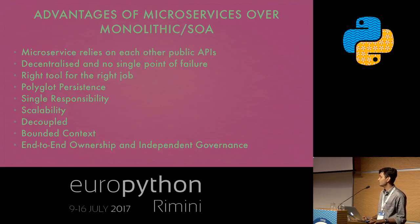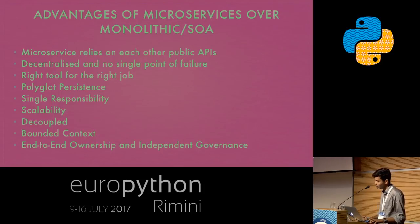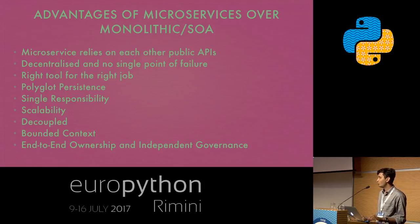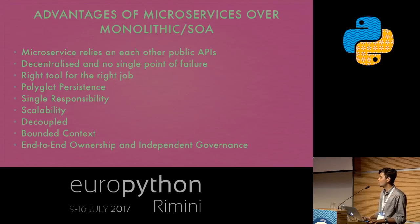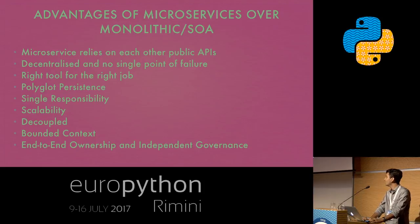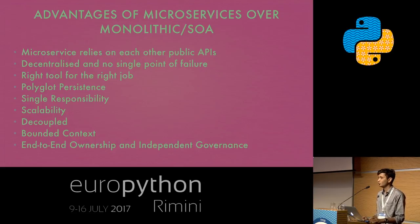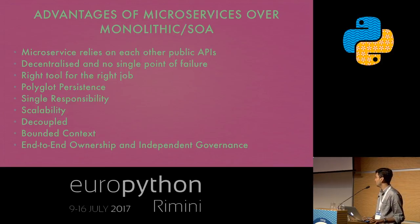The next part is bounded context — it's okay for one service not to know the underlying implementation of another. The next point is more towards the cultural side: end-to-end ownership. With the normal software development life cycle, a project goes from requirement analysis through design, development, and into support and maintenance. Here there is a slight difference — one team owns the entire service development life cycle and they completely own it. And independent governance as well, because microservices has to be autonomous, so it should have all the components to help track monitoring metrics and things like that.